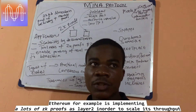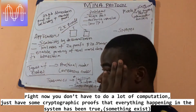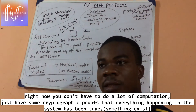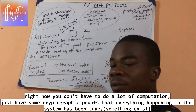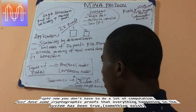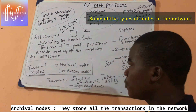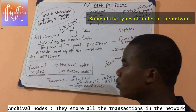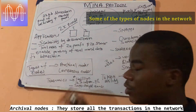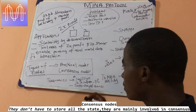Mina is able to implement a lot of zero-knowledge proof technologies to scale the blockchain. You don't have to do a lot of computation — you just have some cryptographic proof that everything happening in the system so far has been true. In this system there are different types of nodes. There are nodes that record all the transactions but only participate in consensus, and consensus here is not a voting-based consensus.